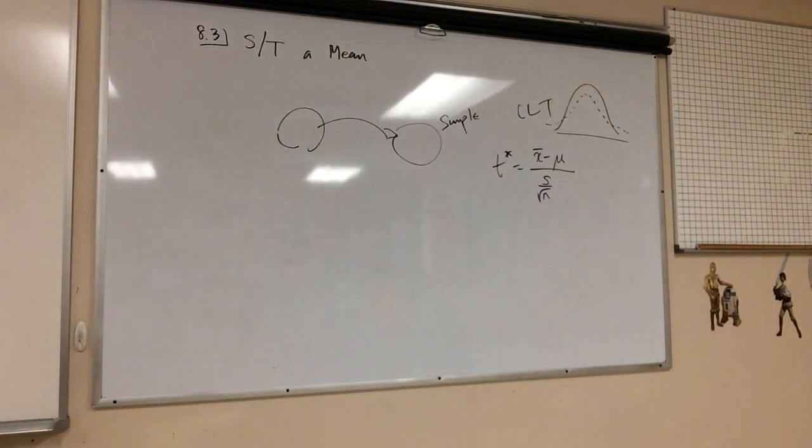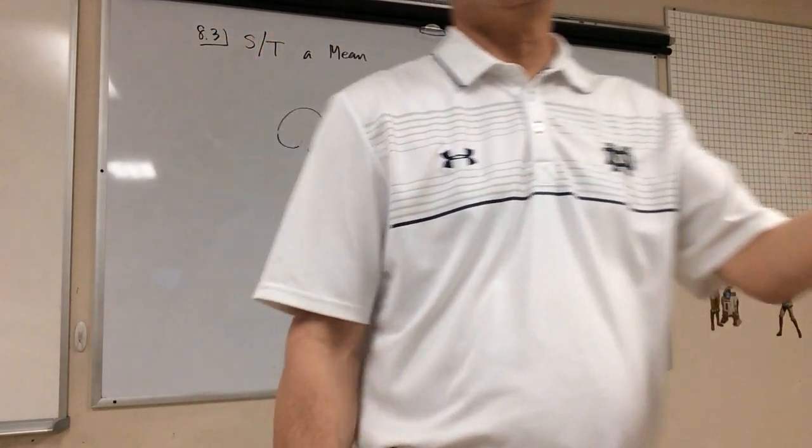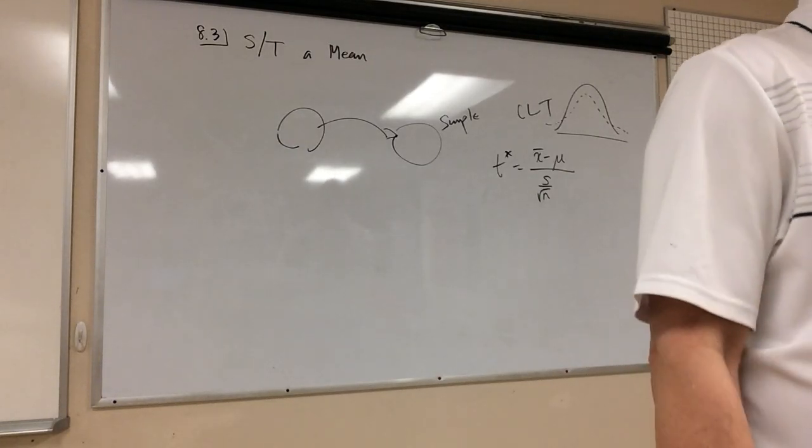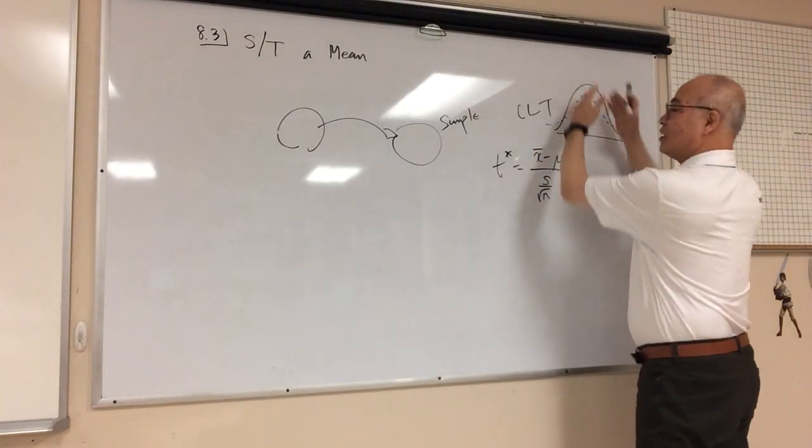So that's, in a nutshell, what we did. Flip the page. Requirement of normality or n greater than 30. We talked about that. Important properties of the student t-distribution. Number one, student t-distribution is different for different sample sizes. Why is it different? What changes when the sample size changes? The degree of freedom changes, right? The degree of freedom changes and you are going to approach a normal distribution.